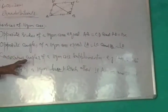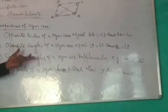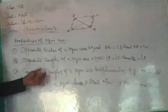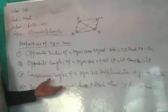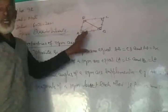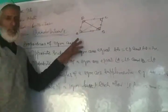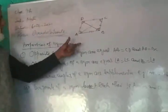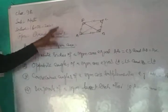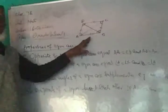What is a parallelogram? A parallelogram is a quadrilateral because it has four sides. But how can we say that it is a parallelogram? Because its opposite sides are equal and parallel. It is a parallelogram.